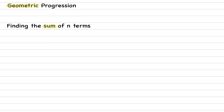Let's look at the formula. The formula is Sn — s for sum, n for number of terms — is equal to a times (r raised to the power n minus 1) over (r minus 1). We use this formula when our common ratio is greater than 1.